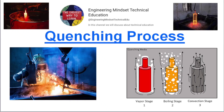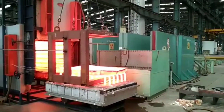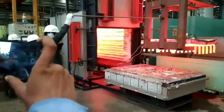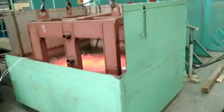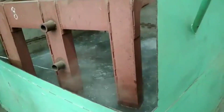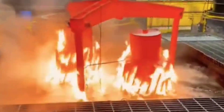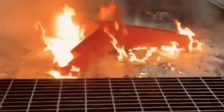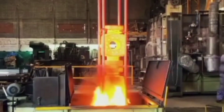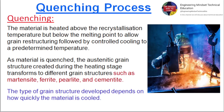Quenching process. The material is heated above the recrystallization temperature but below the melting point to allow grain restructuring, followed by controlled cooling to a predetermined temperature. As the material is quenched,